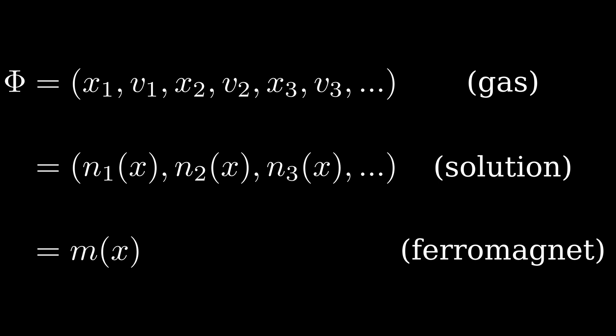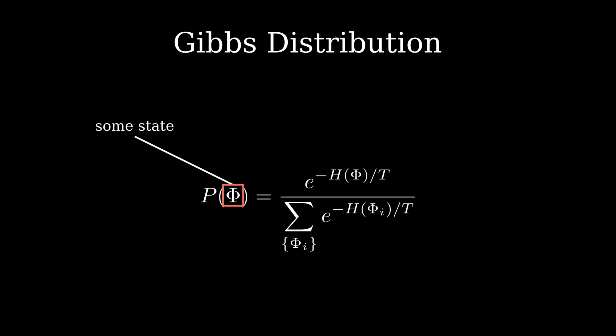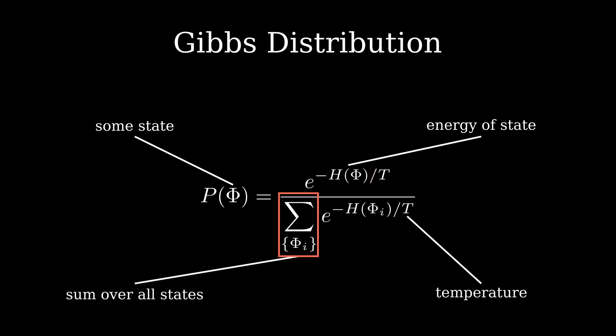The probability of any particular state or value of phi is given by a distribution called a Gibbs distribution. The probability of a state phi is proportional to e to the power minus H over T, where H is the energy of that particular configuration, called the Hamiltonian, and T is the temperature. The sum is taken over all possible configurations so that the probabilities sum to 1.